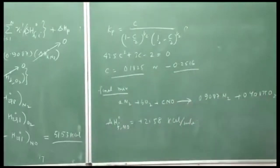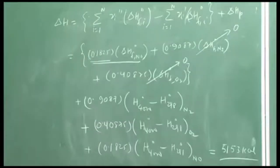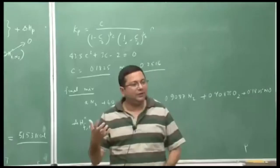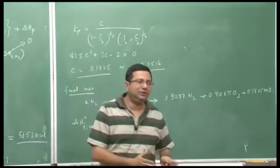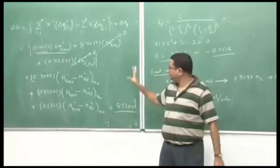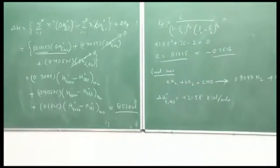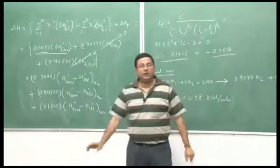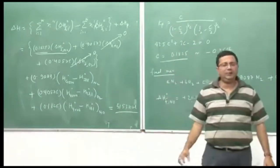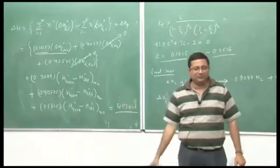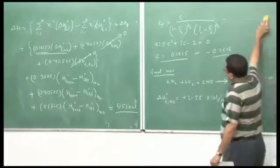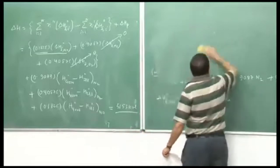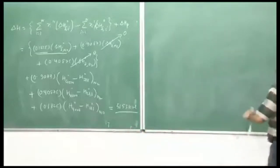That explains how we estimate the solution. In this problem we showed first how to estimate the final composition and then, instead of solving for adiabatic flame temperature, we were given the flame temperature and found how much heat is required. Now I would like to point out one more thing: for the estimation of Kp we talked about Gibbs free energy. Many times Gibbs free energy is not available, but typically enthalpy variations are given. So how do we get Kp if the enthalpy change is given?